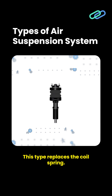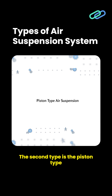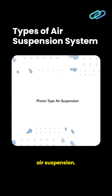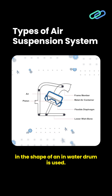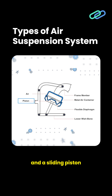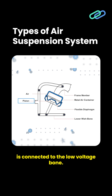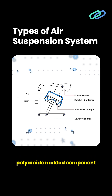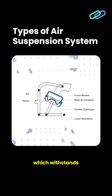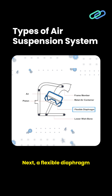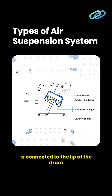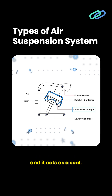This type replaces the coil spring. The second type is the piston type air suspension. Here, a metal container in the shape of an inverted drum is used. This drum is connected to the frame and a sliding piston is connected to the lower wishbone. This piston is a rigid polyamide molded component with glass fiber which withstands load and cushioning shocks. A flexible diaphragm is connected to the lip of the drum and it acts as a seal.